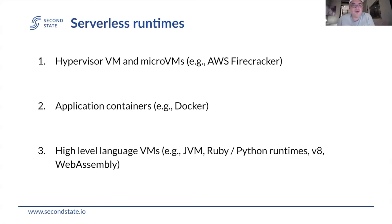Before we get into how WebAssembly could help, let's review popular serverless runtimes. The first is what we call hypervisor VM or hardware VM — some people call it micro VMs, like AWS Firecracker — that's how AWS Lambda runs. It provides hardware-based isolation for each serverless instance, but it's very inefficient because you start a whole operating system and software stack just to run a single function and then shut it down. To start it up may take a second, and then the function may only take 10 milliseconds.